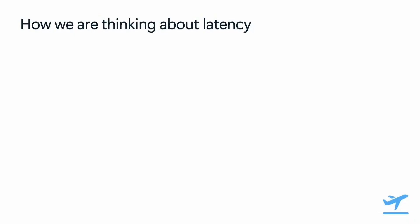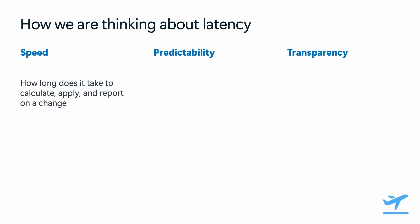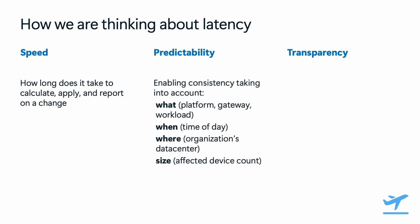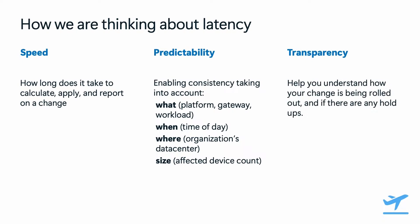When you talk to customers about latency, what I hear falls into three big buckets: speed, predictability, and transparency. Speed is about getting changes to devices as fast as possible. Predictability is about enabling consistency so the same action takes the same amount of time regardless of the platform, or other changes going on in your organization or in your same data center. Transparency is about giving you all the information you need to determine if things are well underway and to help you troubleshoot if there are any hiccups.